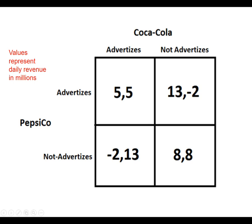Here is what's called the advertising game. Advertising is expensive — let's see if it benefits either firm. Coca-Cola is the second set of numbers and Pepsi is the first. If Coke advertises, Pepsi can advertise and get $5 million in profit or lose $2 million — so Pepsi should advertise. If Coke doesn't advertise, Pepsi can advertise and make $13 million or not advertise and make $8 million. So Pepsi's dominant strategy is to advertise.